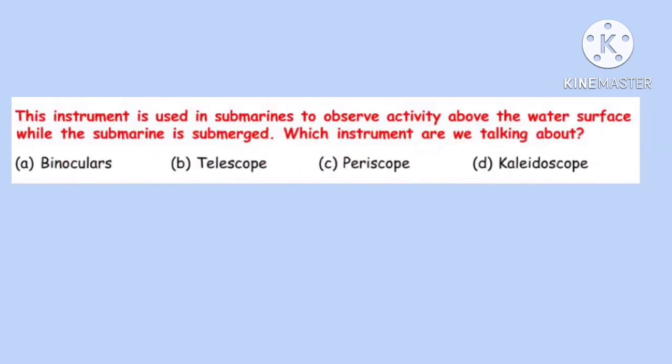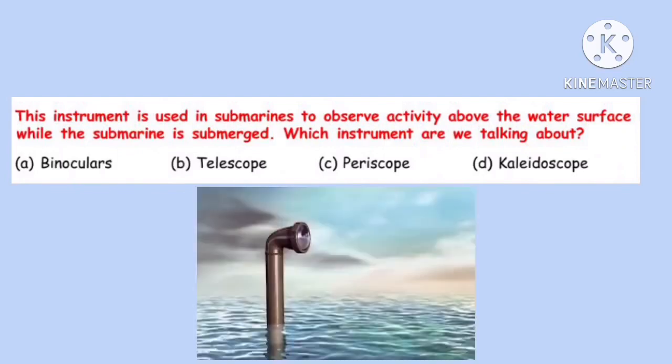Question 29. This instrument is used in submarines to observe activity above the water surface while the submarine is submerged. Which instrument are we talking about? Correct option is C: Periscope.